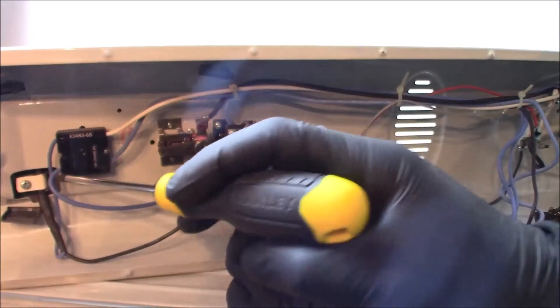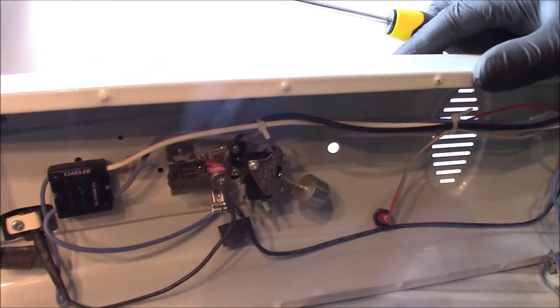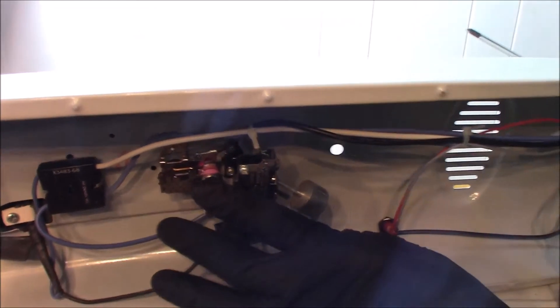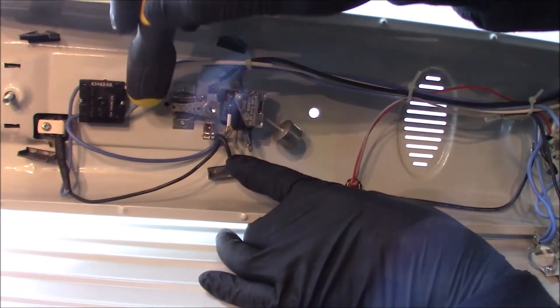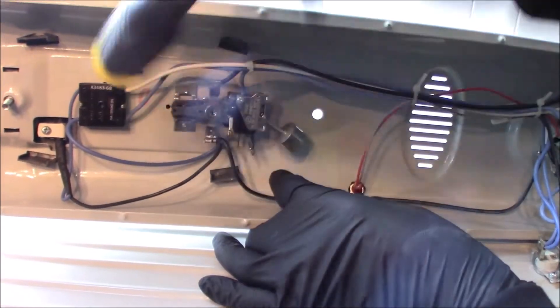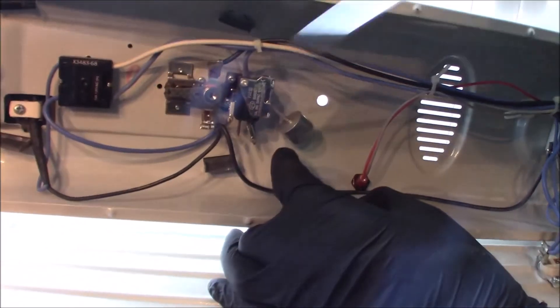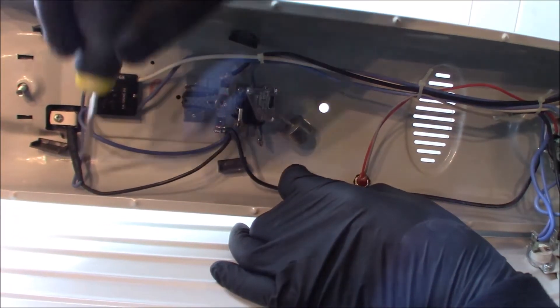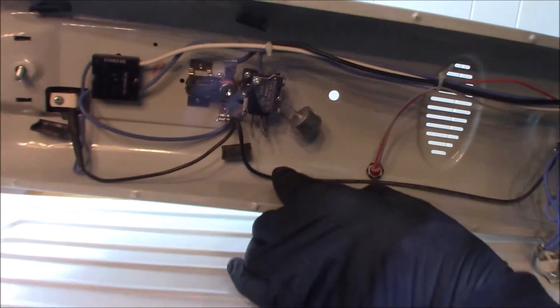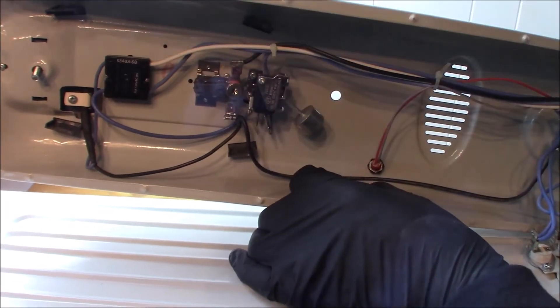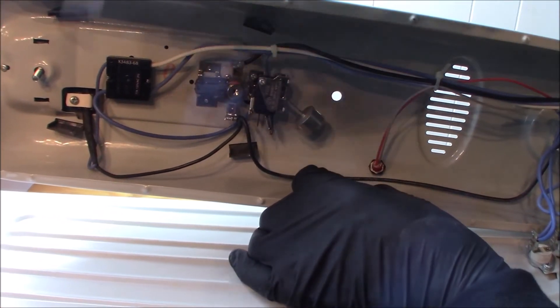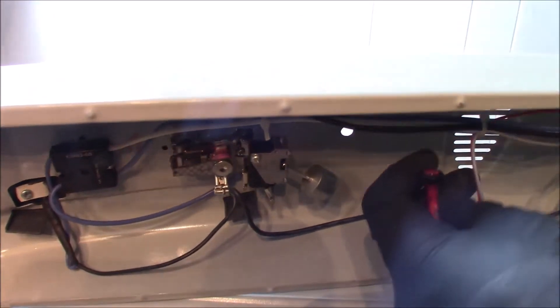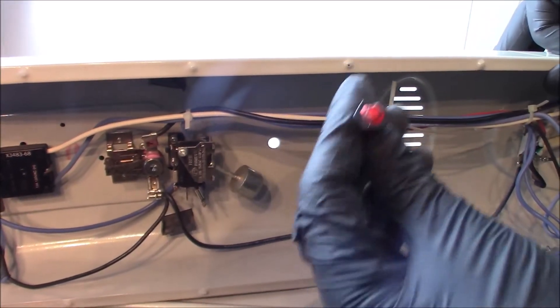It branches off into different connections. This one is connected to the main input power. The power goes to this switch, which breaks off - one goes into the thermostat and one goes up to the other switch. The power from the main unit goes to all the switches in the system, the main switch and the thermostat switch. Here's the LED light, it's a red LED light.